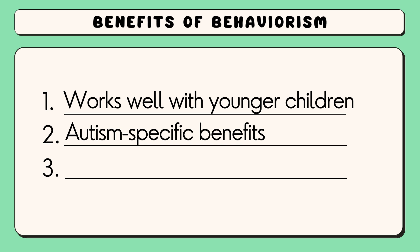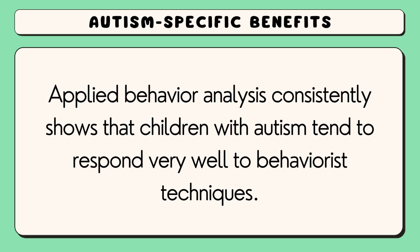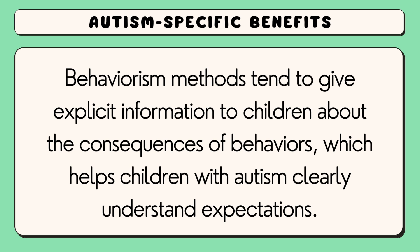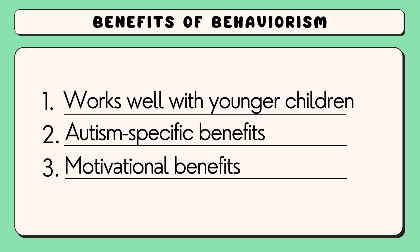Second, with children with autism. Research within a specific area of behaviourism known as applied behaviour analysis consistently shows that children with autism tend to respond very well to behaviourist techniques. Oftentimes, this is because children with autism need clear rules and guidelines. Behaviourism methods tend to give explicit information to children about the consequences of behaviours, which helps them clearly understand expectations.